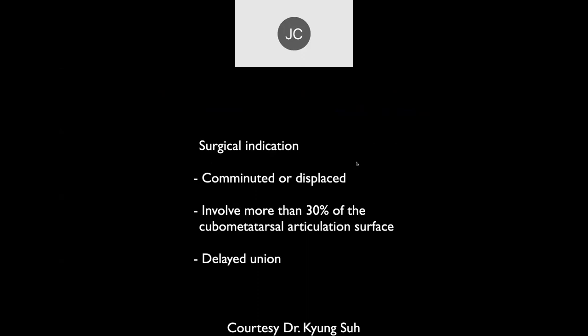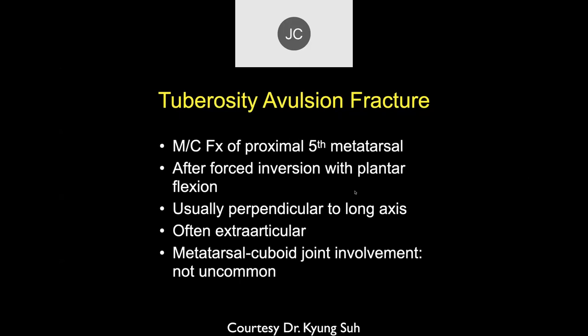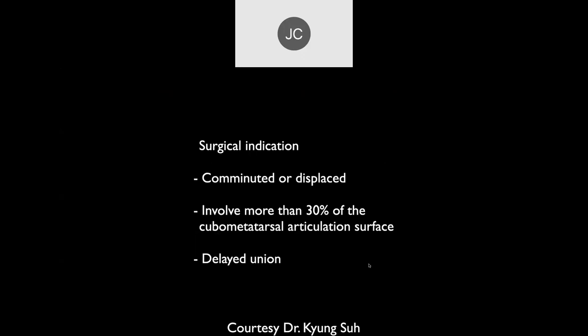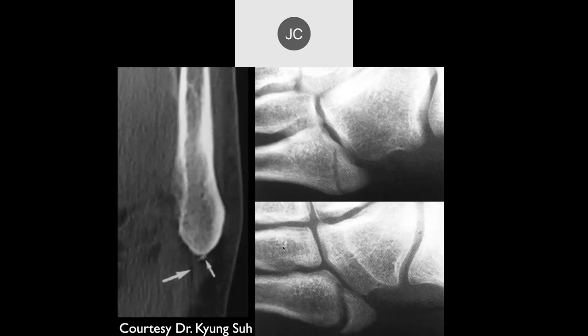Avulsion fractures at the base can be longitudinal or transverse, and can be extra-articular, just involving the tip, or can involve the metatarsal-cuboid joint as well. Surgical indications are if it's comminuted or displaced, or if it involves a significant amount of the cuboid metatarsal articulation. Delayed union can occur, but most of these are treated non-surgically. The fractures vary in terms of location depending on the type of injury, and if it involves the joint, it's typically from a tendon pull.